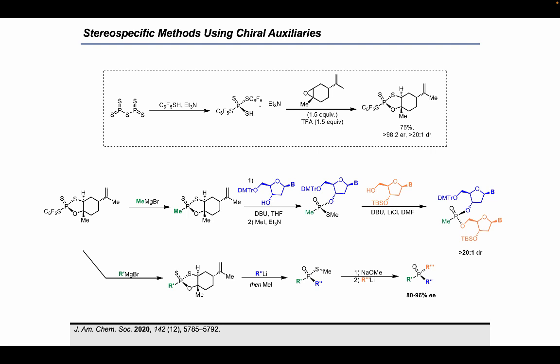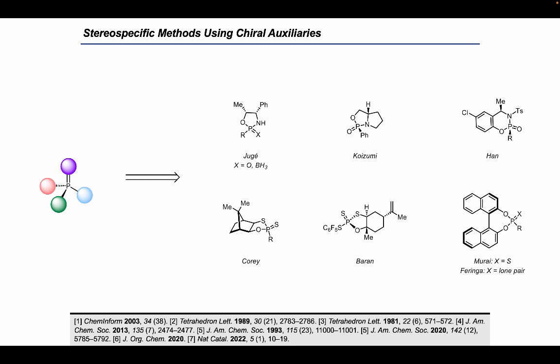While chiral auxiliaries represent a very versatile means for accessing stereogenic phosphorus targets, one drawback is that they require stoichiometric and sometimes super-stoichiometric quantities of chiral material, whereas ideally a more efficient and atom-economical approach would only require catalytic amounts of chiral material.